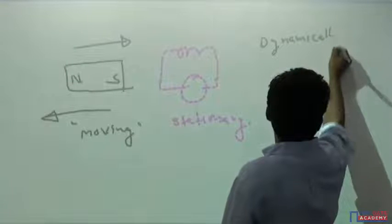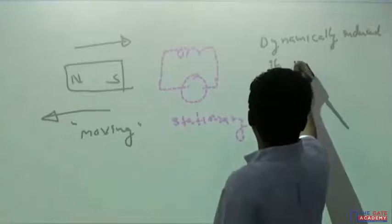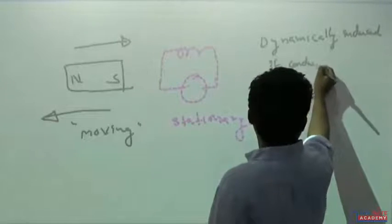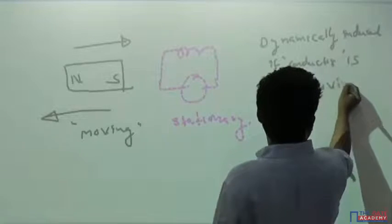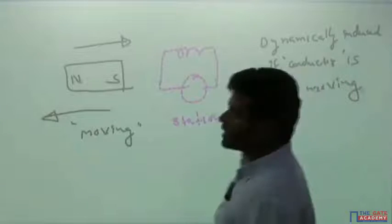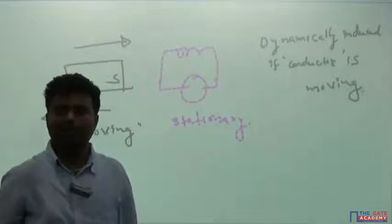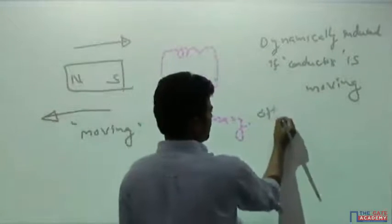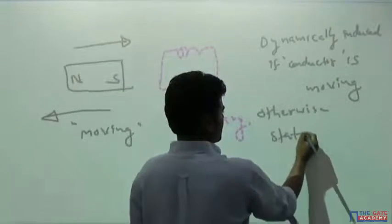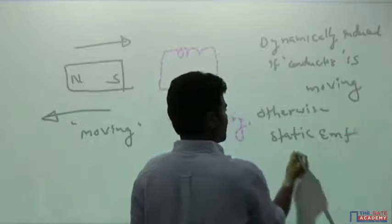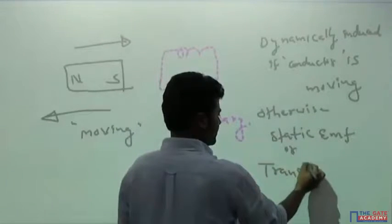These two methods have different names. If the conductor is stationary and the magnet is moving, the EMF is called a statically induced EMF. If the conductor is moving and the magnet is stationary, it is called a dynamically induced EMF. Statically induced EMF is also called transformer EMF.